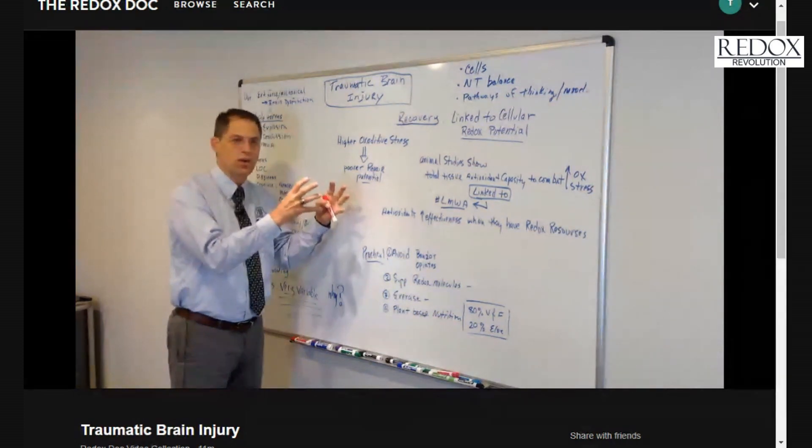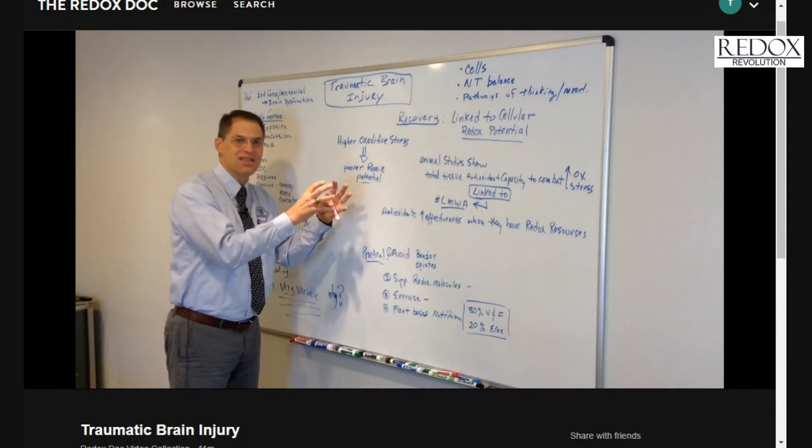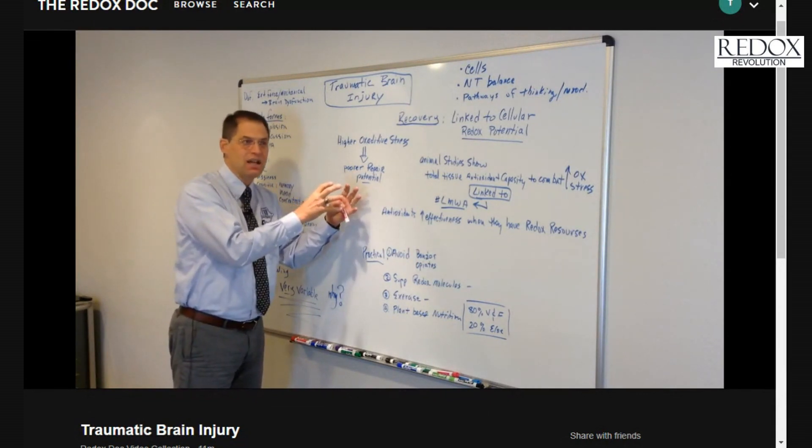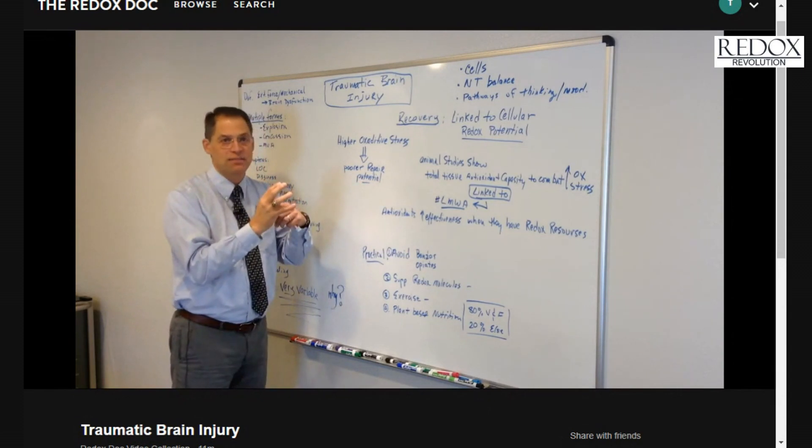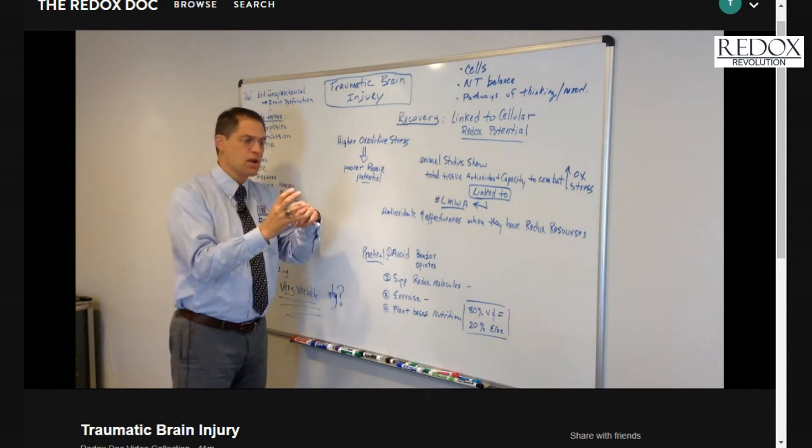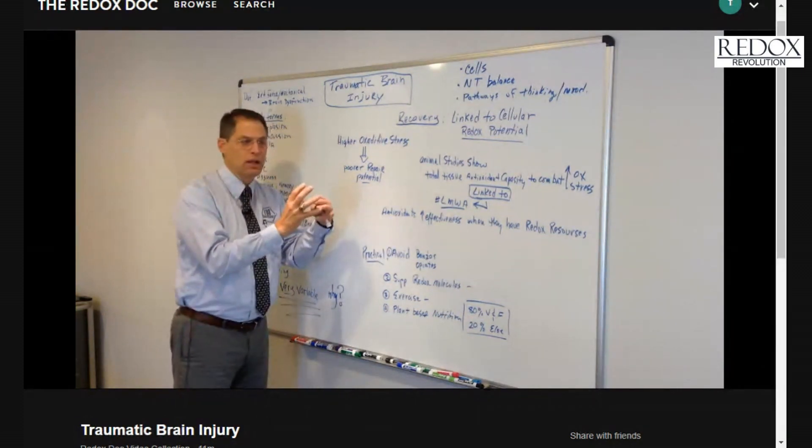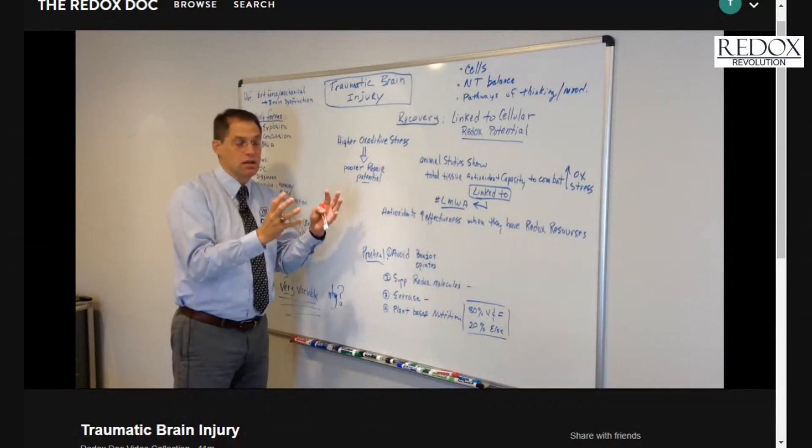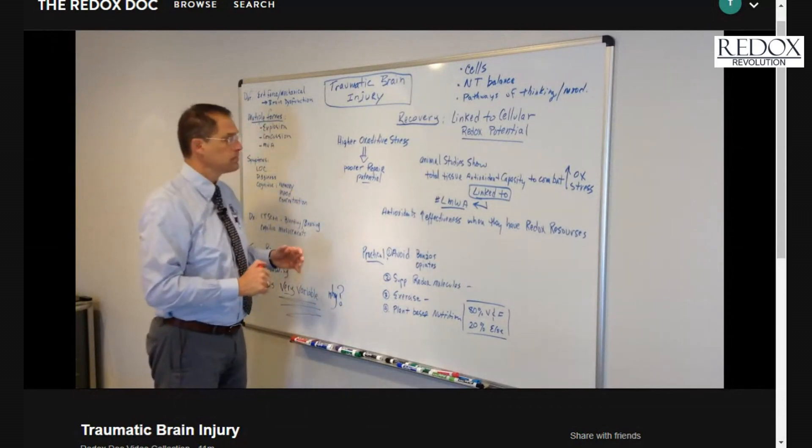It bangs against the skull on the inside and bounces back against the other side. That is, in medical terms, called coup and contra coup. Both of those are sometimes quite devastating, not to mention just the concussive from an explosion just literally rattles those cells and traumatizes them dramatically.